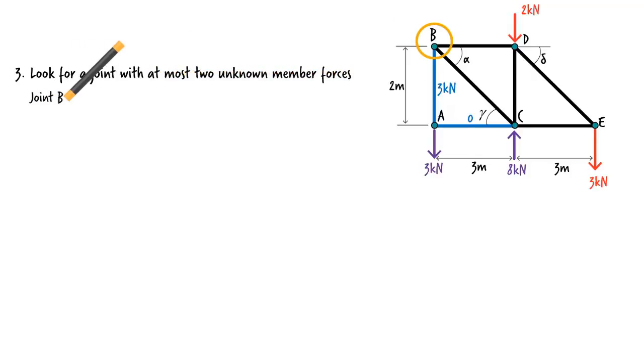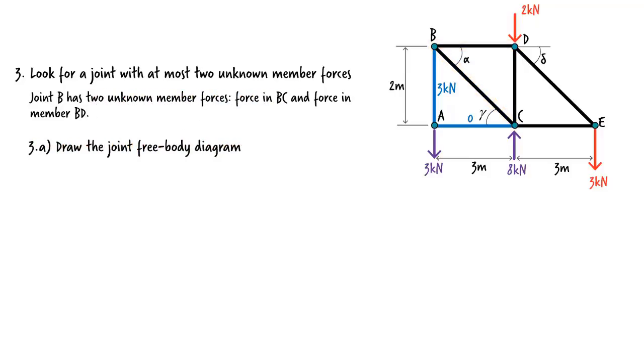At joint B, we have only two unknown forces, the force in member BC and the force in member BD. Let's draw the free body diagram for the joint. Here we need to determine angle alpha. It equals 33.69 degrees.